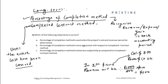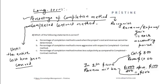Then my revenue recognized is: one thousand dollars divided by eight hundred dollars, multiplied by four hundred dollars, which equals five hundred dollars. This means I experience a gain of one hundred dollars — that is five hundred dollars minus four hundred dollars — under the percentage of completion method.